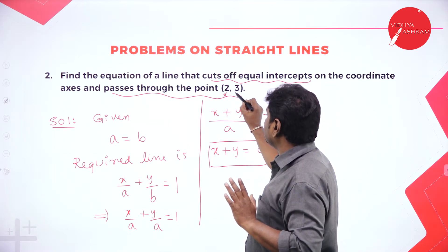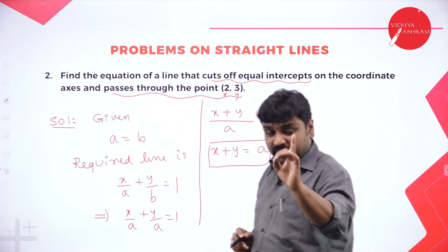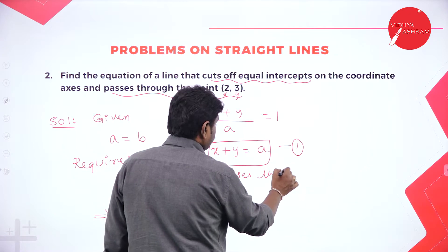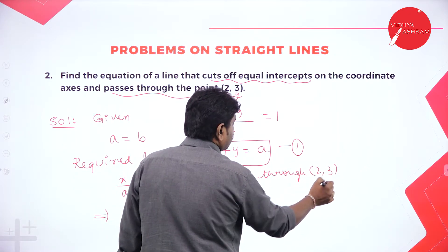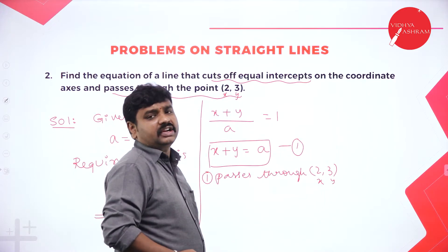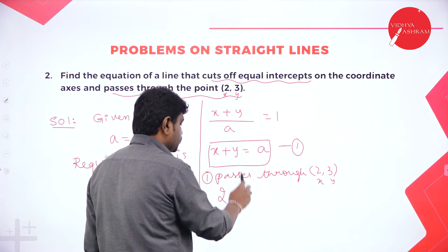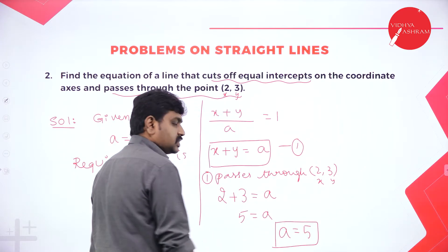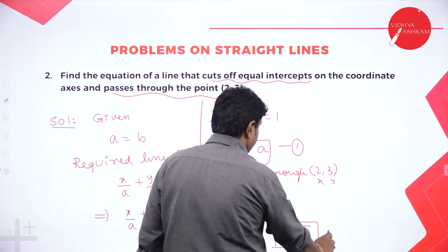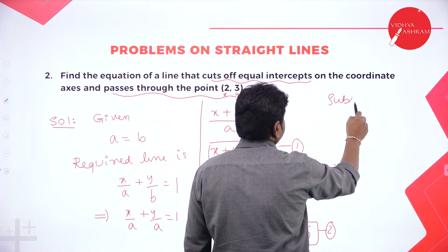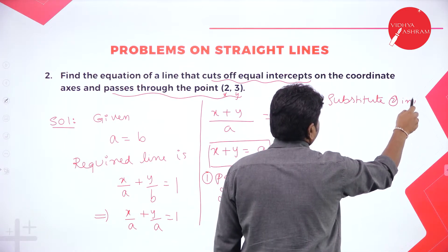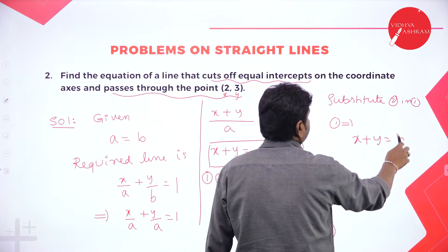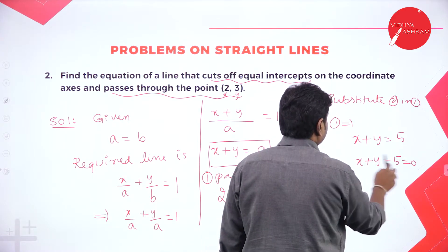The line passes through (2, 3). Substituting x = 2 and y = 3 into x plus y equals a: 2 plus 3 equals a, so a equals 5. Substituting back, the required equation is x plus y equals 5, or x plus y minus 5 equals 0. A shortcut: if any line cuts equal intercepts and passes through (x1, y1), the answer is x plus y equals x1 plus y1.